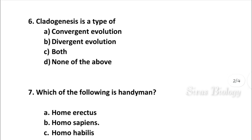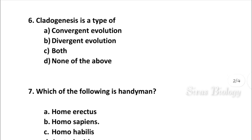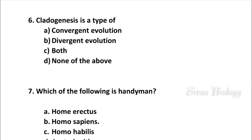Question number 6: Cladogenesis is a type of which evolution? Options: convergent evolution, divergent evolution, both types, none of these. The answer is divergent evolution.